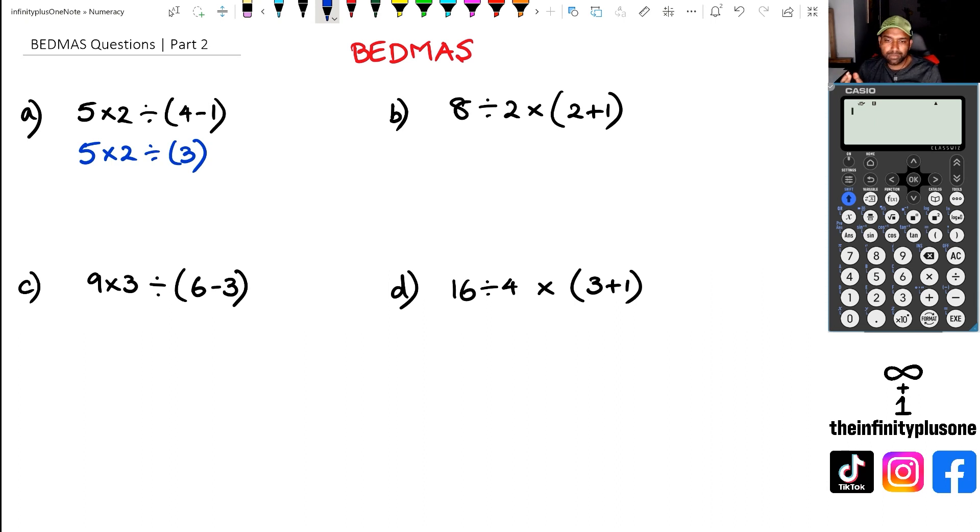And at this point, this is the funny thing about multiplication and division. You could have done this as 5 times 2, and then divide by 3, which means you're going to get 10 over 3. Or you could have done it like 5 times 2 as 10 divided by 3, which means I'm going to get 10 over 3.